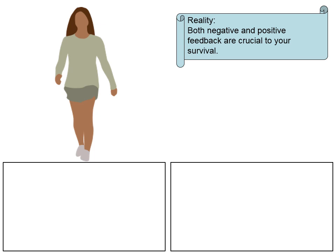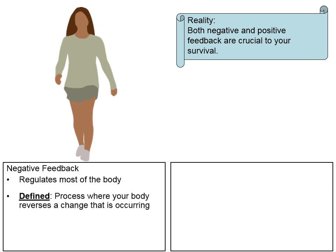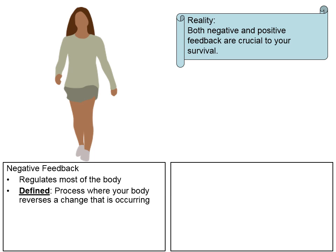Let's start with negative feedback. Negative feedback is what regulates most of the homeostatic levels of the body. It's the process where our body will reverse a change that may be occurring, and this is what keeps our bodies at set points. For instance, our temperature has a set point of about 98.6 degrees. If we get too hot, we will sweat; if we get too cold, we'll shiver — all designed to keep us at our set point.